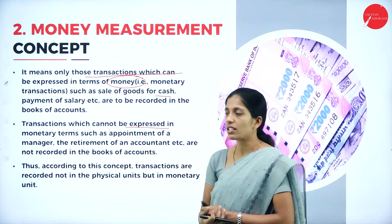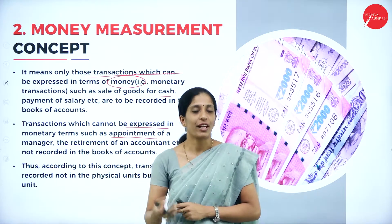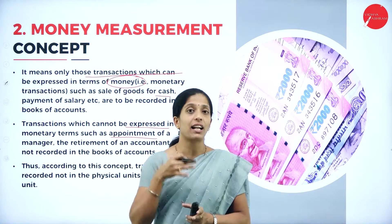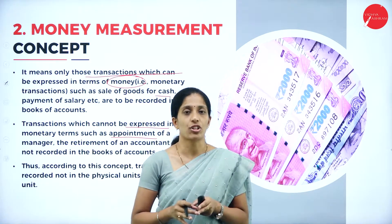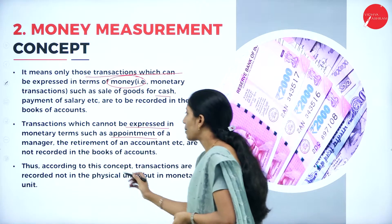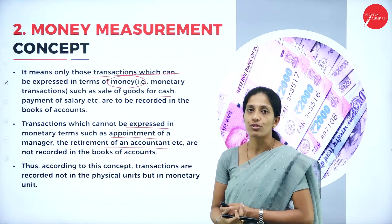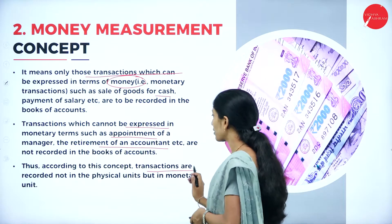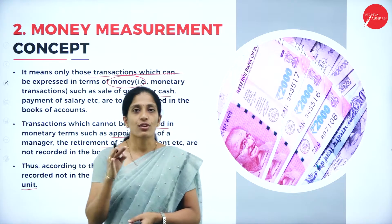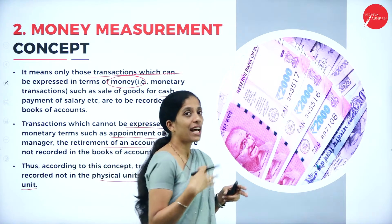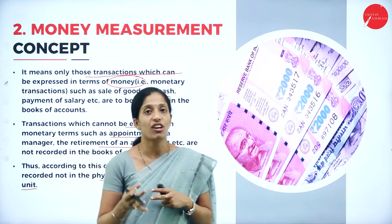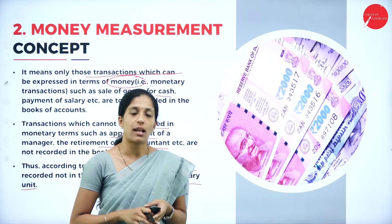Transactions which cannot be expressed in monetary terms — such as appointment of an employee or retirement of an accountant — are not recorded in the books of account, even though they affect the profitability of the business. According to this concept, transactions are recorded not in physical units but in monetary units. Only those transactions measurable in money can be recorded.